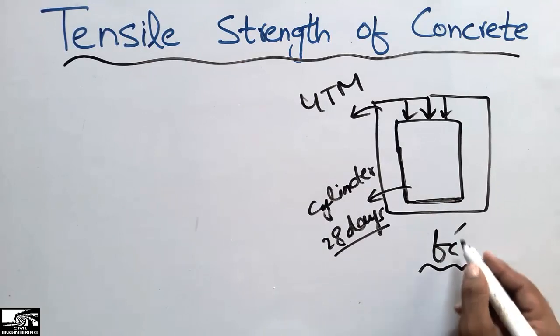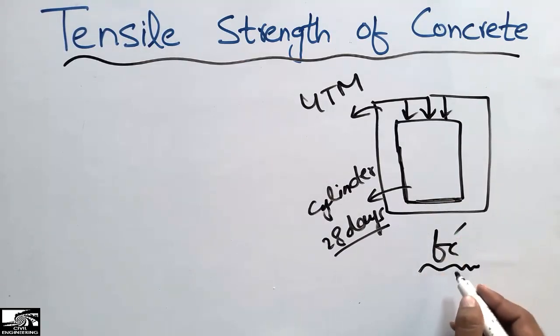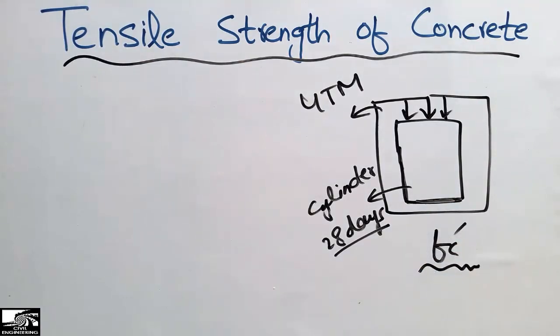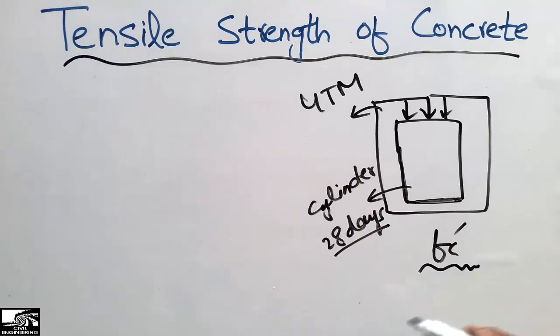The compressive strength of the concrete is represented by fc. This compressive strength depends on various factors: the aggregate size, the shape of the aggregate, the water-cement ratio, the type of cement, and other factors.